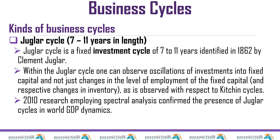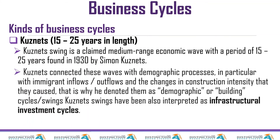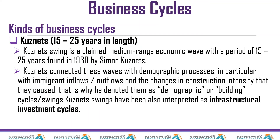2010 research employing spectral analysis confirmed the presence of the Juglar cycle in world GDP dynamics. The next cycle, taking 15 to 25 years, is the Kuznets swing — a medium-range economic wave found in 1930 by Simon Kuznets. Kuznets connected these waves with demographic processes, particularly immigrant inflows and outflows and changes in construction intensity, which is why they are also called demographic or building cycles.